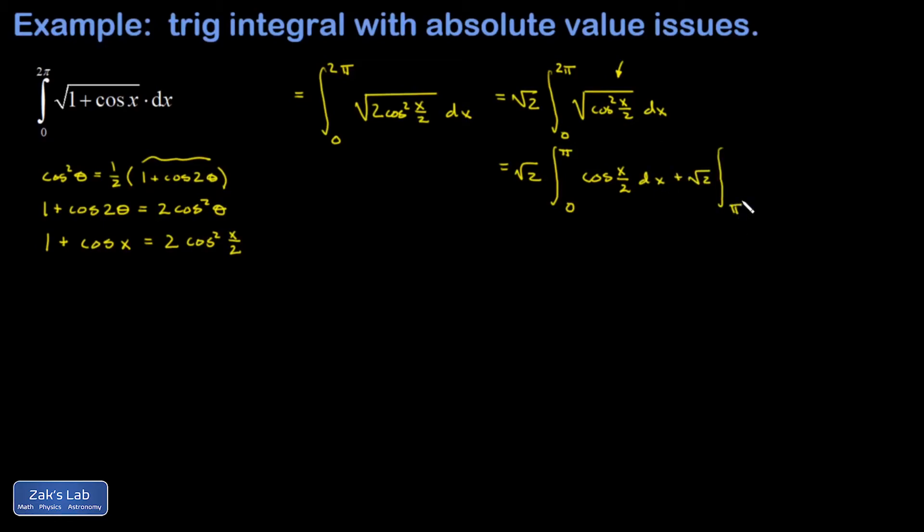And the next piece is from pi to 2 pi. And on that interval the argument of this cosine is going from pi over 2 to pi and the cosine is negative the entire time. That means the absolute value gives me the negative of the cosine function. And that's just to make it positive.